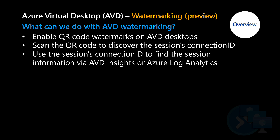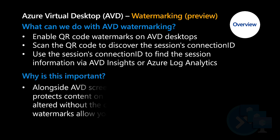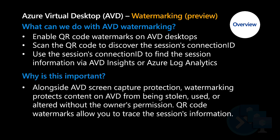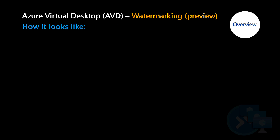Once you enable the QR code watermark on Azure Virtual Desktop, you can scan the QR code to discover the session connection ID. Using this connection ID, you can get all the user information via Azure Virtual Desktop Insights or Azure Log Analytics. Alongside screen capture protection, watermarking protects content on Azure Virtual Desktop from being stolen, used, or altered without the owner's permission, and the QR code allows you to track and trace session information as an admin.